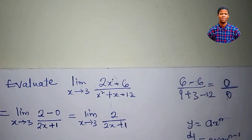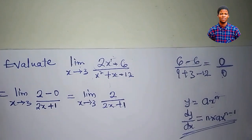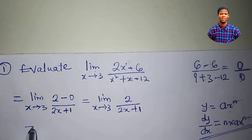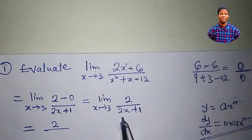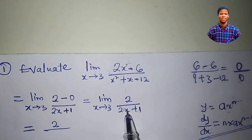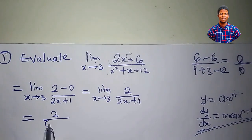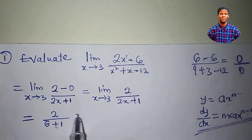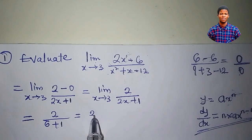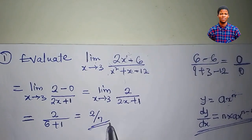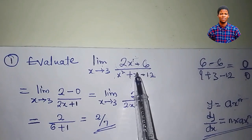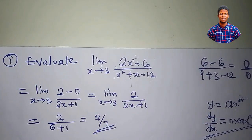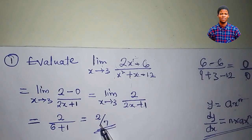Let us plug in the value of x now into this function. That would be 2 all over — plug in 3 — 2 times 3 is 6, plus 1, giving us 2 all over 7. So the limit of this function as x approaches 3 is equal to 2 over 7.